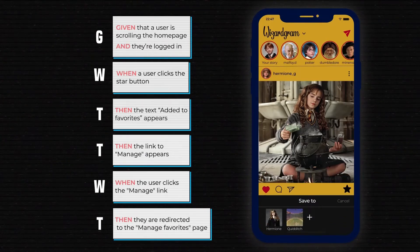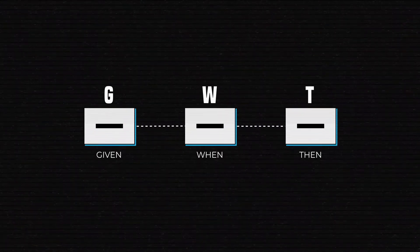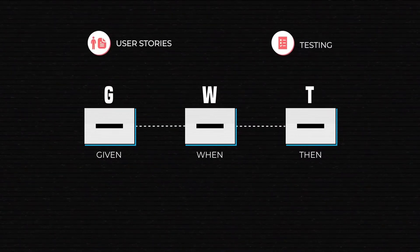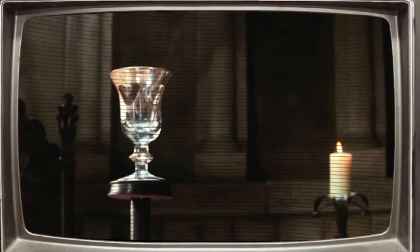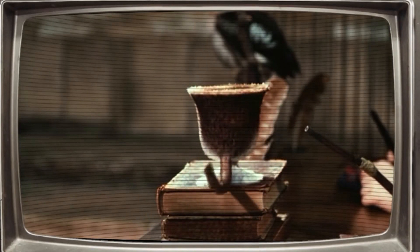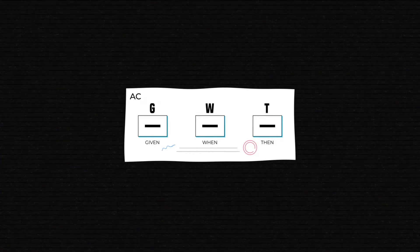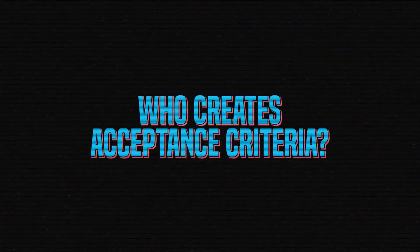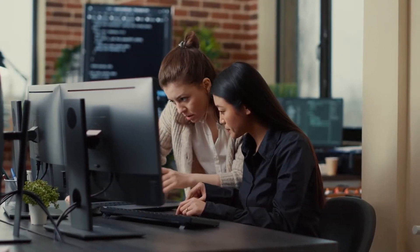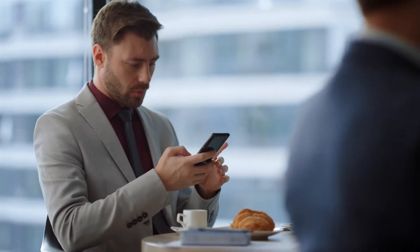Also, if this sequence reminds you of test cases, you're not wrong. The given-when-then format can be used for both user story description and testing, helping QA decide if the feature is accepted or not. That one scenario we've just created is one acceptance criterion, and each user story should have at least one. You can imagine how many criteria must be written. So, who creates acceptance criteria? Acceptance criteria must be written before any development starts, because the product backlog is formed from user stories and their criteria.